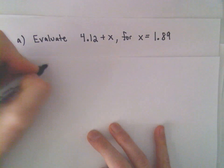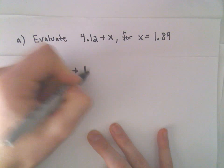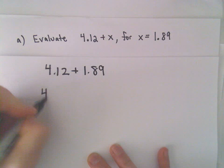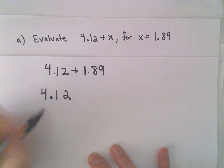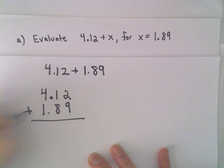So what we're evaluating then is 4.12 plus 1.89. I'm just going to line these up. So we've got 4.12 and 1.89. We'll add these.